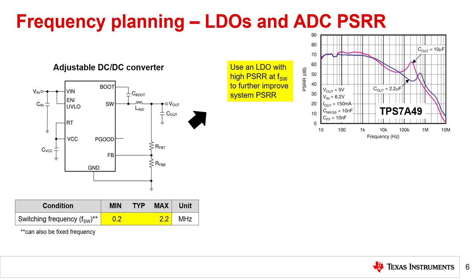The image on the top right shows a PSRR versus frequency plot for the Texas Instruments TPS7A49 LDO. Note that as the switching frequency increases, the PSRR of this LDO decreases. Therefore, choose the lowest acceptable switching frequency to benefit from the LDO PSRR as much as possible. Alternatively, some ADCs include integrated LDOs that can be used for this purpose as well. Refer to the ADC data sheet for more information.